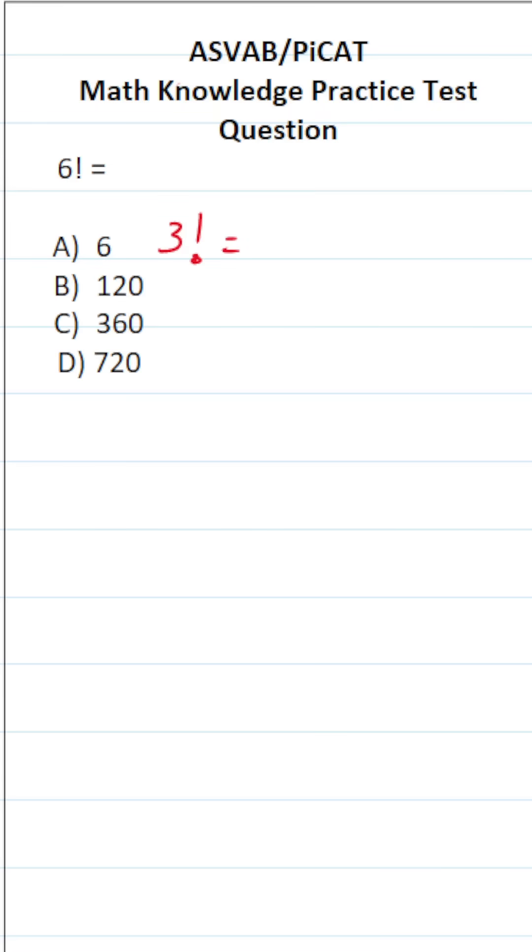Factorial means you take the number that you're given—we're given 3 in this case—you multiply it by every number that's less than the given number until you get to 1. So 3 factorial is the same thing as 3 times 2 times 1. And all you have to do is multiply this out. 3 times 2 is 6. 6 times 1 is 6. So 3 factorial, in other words, is 6.